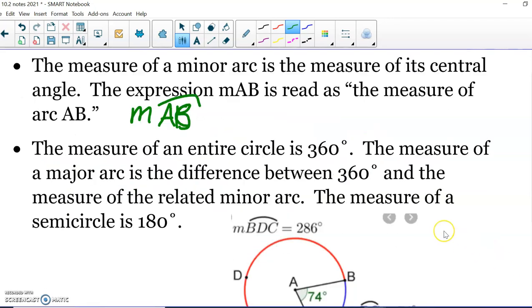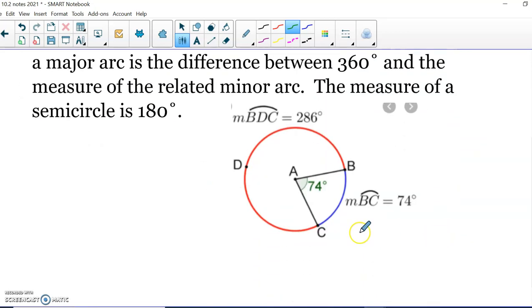And that's what we're talking about here. So they're showing you the measure of arc BC is 74 degrees. And then we would take 360 minus 74, and we would know the measure of the major arc BDC is 286 degrees. Of course, a semicircle is 180 degrees.